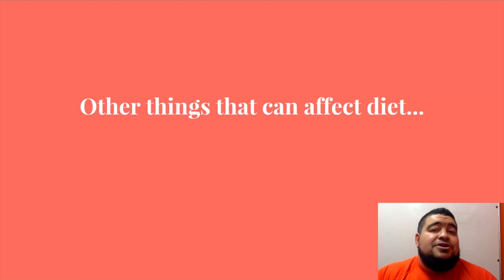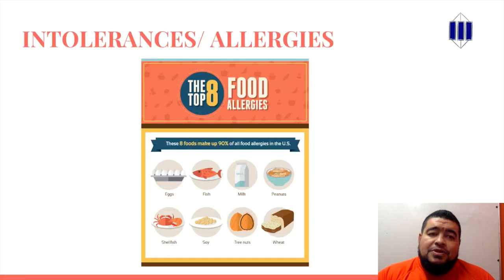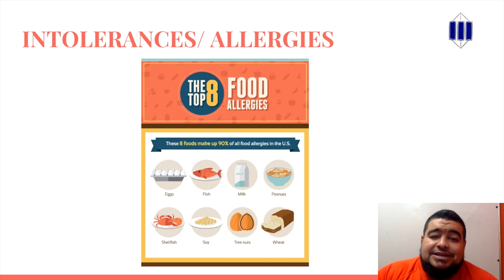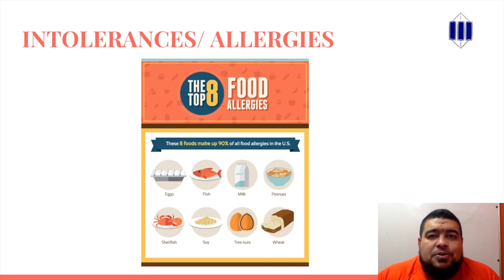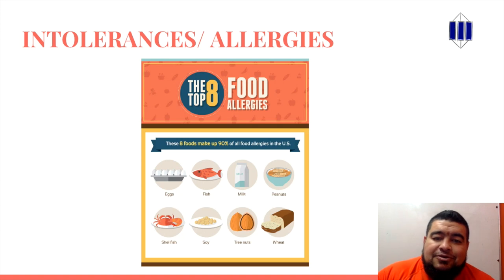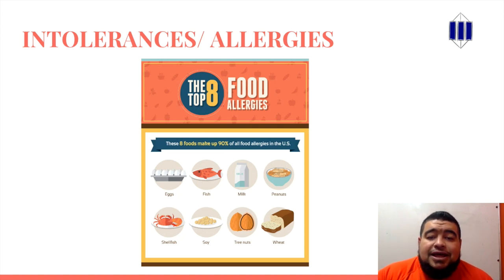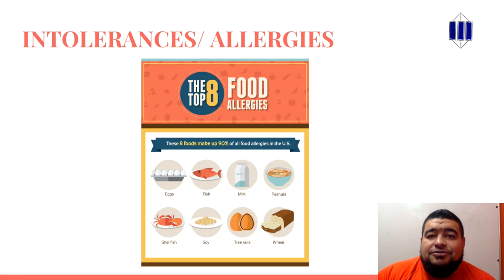There are a few other things that can also affect your diet. For example, intolerances or allergies. Quite a lot of people are allergic to things like fish and shellfish. Obviously lactose — so milk. Things like peanuts — a lot of schools don't allow you to bring your peanut butter sandwiches.